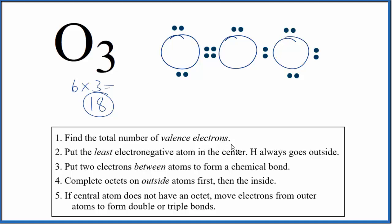With ozone we have something called resonance, because we could have put the double bond on this side and had a single bond here. So there are really two ways we could draw it. In reality, it's kind of a mix or an average of these two bonds.